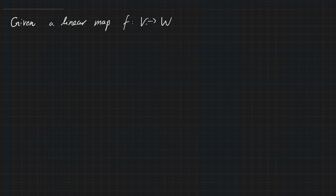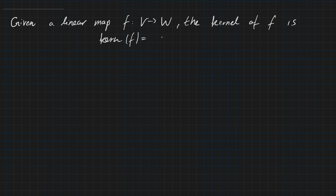So given a linear map f from v to w, the kernel of f is defined as the set of all vectors v from the vector space V such that f of v equals the zero vector — the zero vector because zero is an element from the vector space W, so we have all coordinates equal to zero, and this always exists because W is a vector space and we always have a zero vector.